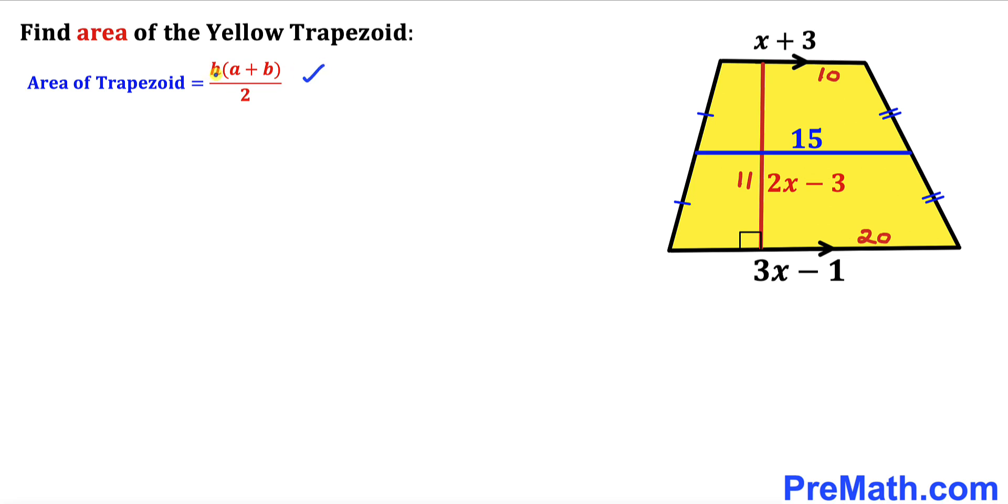Area equals to height times a plus b divided by 2. And in our case our a value is 10, b value is 20, and our h value is 11. Let's go ahead and fill in the blanks in this formula.